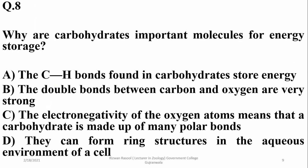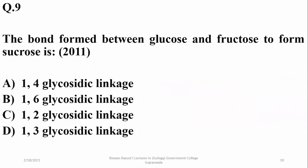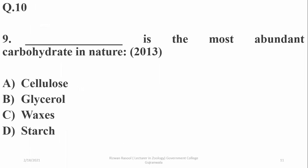Why are carbohydrates important molecules for energy storage? Because carbon-hydrogen bonds found in carbohydrates are responsible for the storage of energy; other options are irrelevant. The bond formed between glucose and fructose to form sucrose is a 1-2 glycosidic linkage. The most abundant carbohydrate in nature — from the 2013 UHS exam — is cellulose.